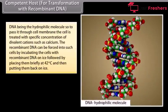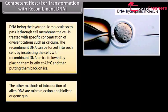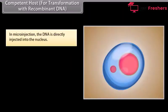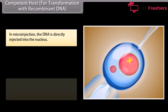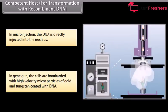Competent host for transformation with recombinant DNA. DNA being a hydrophilic molecule, to pass it through the cell membrane, the cell is treated with a specific concentration of divalent cations such as calcium. The recombinant DNA can be forced into such cells by incubating the cells with recombinant DNA on ice, followed by placing them briefly at 42°C and then putting them back on ice. Other methods of introduction of alien DNA are microinjection and biolistics or gene gun. In microinjection, the DNA is directly injected into the nucleus. In the gene gun, cells are bombarded with high-velocity microparticles of gold and tungsten coated with DNA.